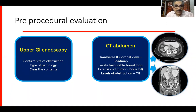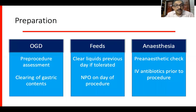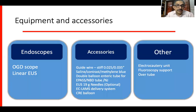In pre-procedure preparation, an upper GI endoscopy is a must to confirm the site of obstruction, look at the type of pathology, and clear the contents. A CT abdomen is always required — transverse and coronal views should be inspected to act as a roadmap to locate a favorable bowel loop, look for extension of tumor into the body or DJ flexure, and check for multiple levels of obstruction, which would be a contraindication. After assessment and clearing of gastric contents, patients should be given only clear liquids prior to the procedure and kept NPO on the day of procedure. A pre-anesthetic check is required, IV antibiotics can be given, and all accessories — OGD scope, linear EUS scope, guide wires, saline, double balloon enteric tube or NPD tube — should be available.